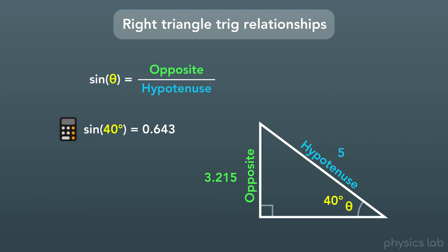And that might seem kind of random, but this number is equal to the ratio of these two side lengths. So if we do that, the opposite side divided by the hypotenuse, which is 3.215 divided by 5, we get the exact same number, 0.643.